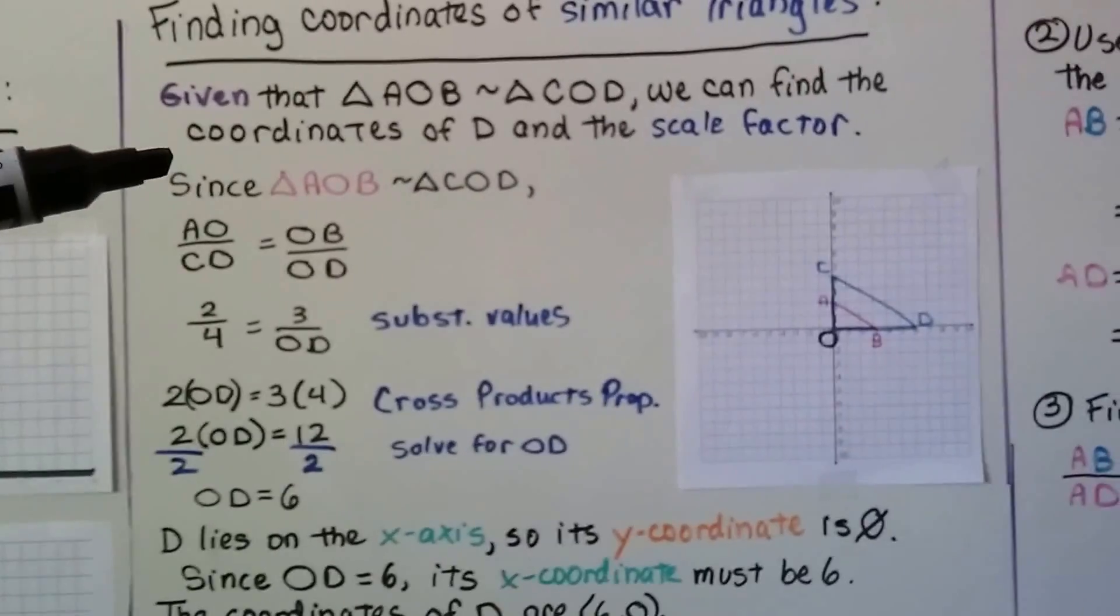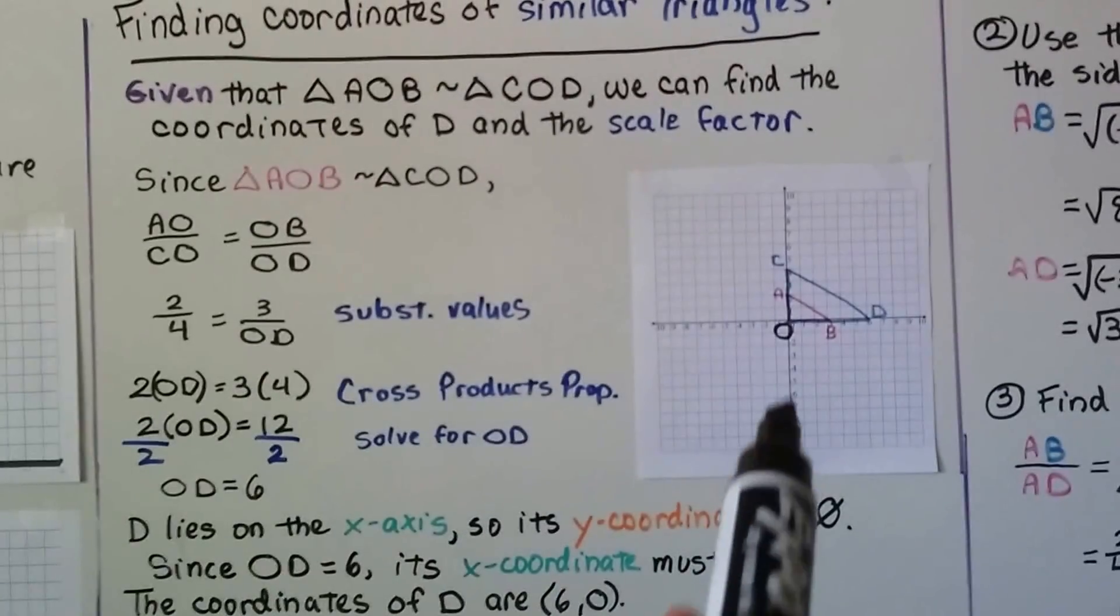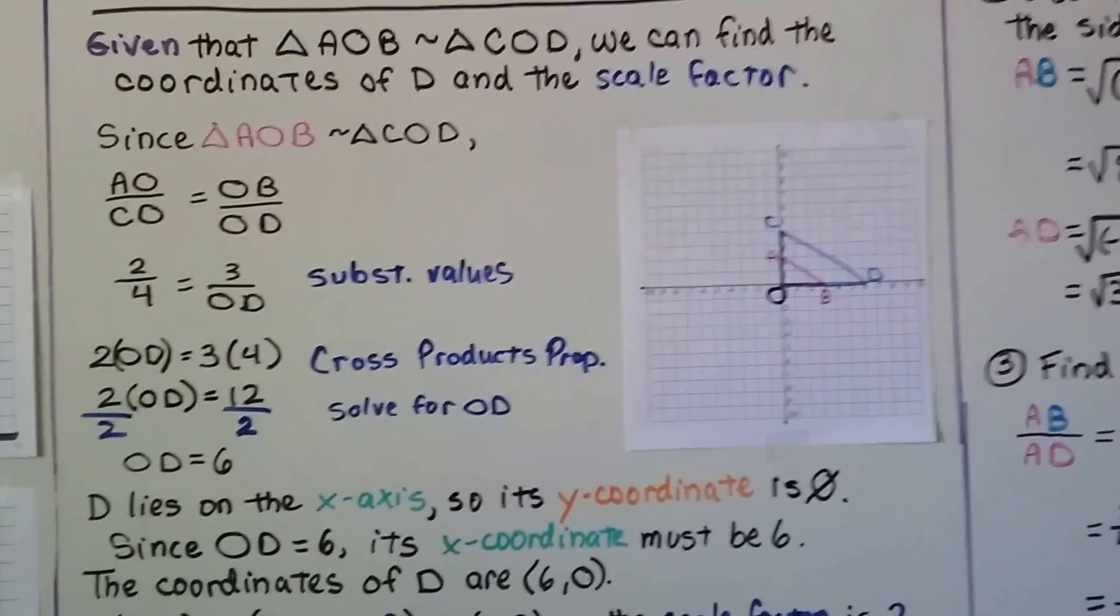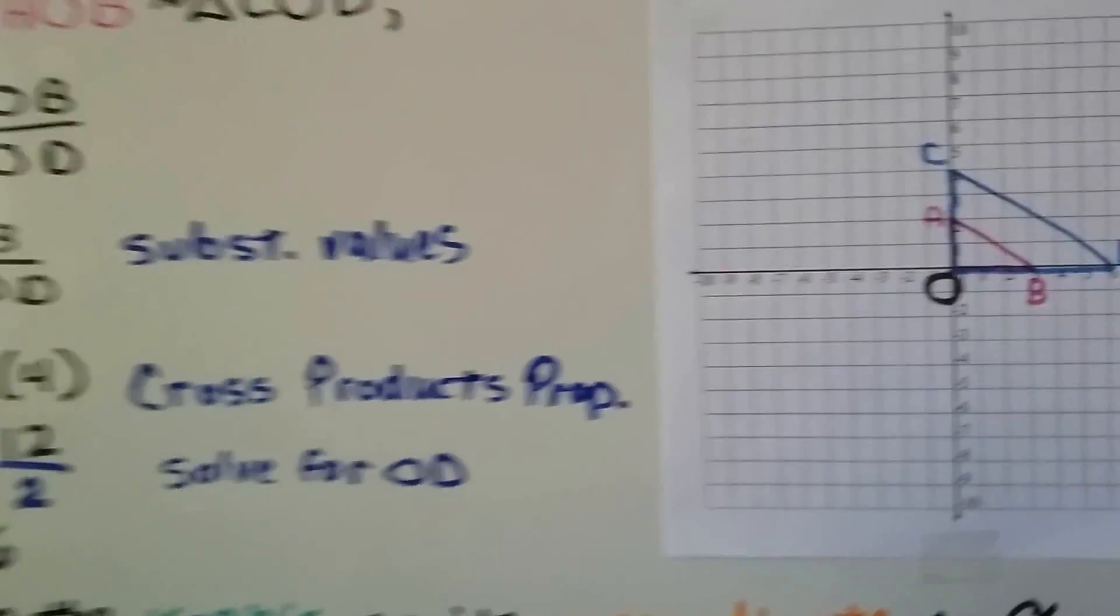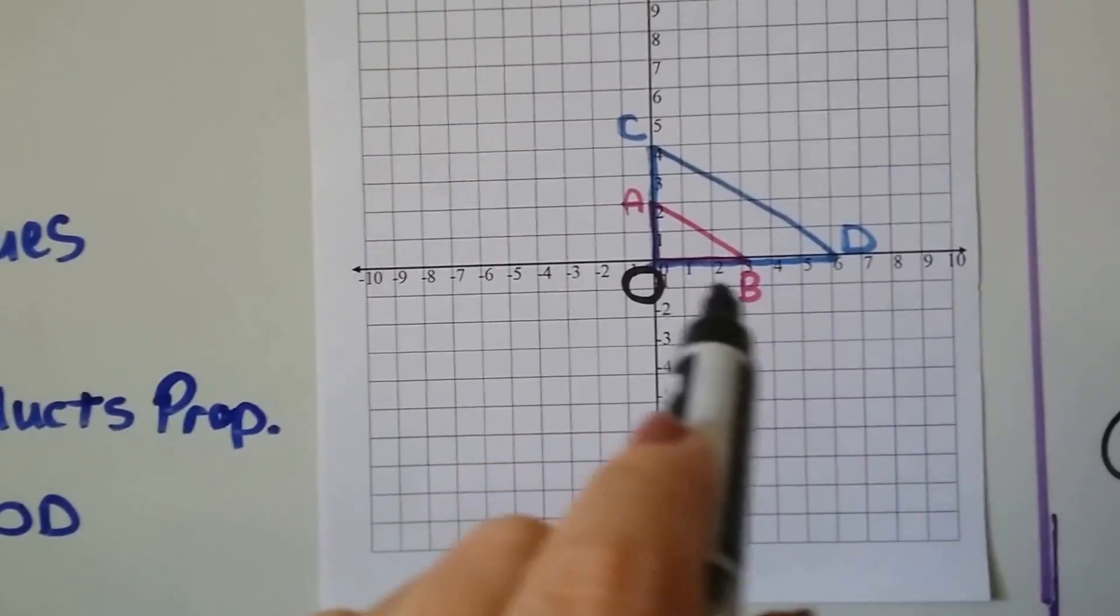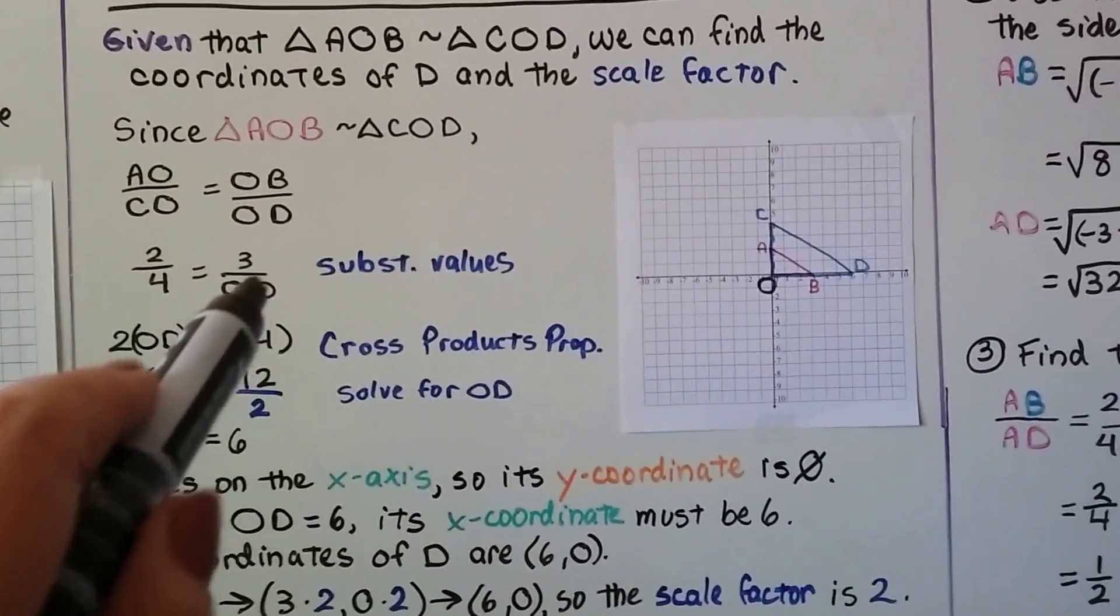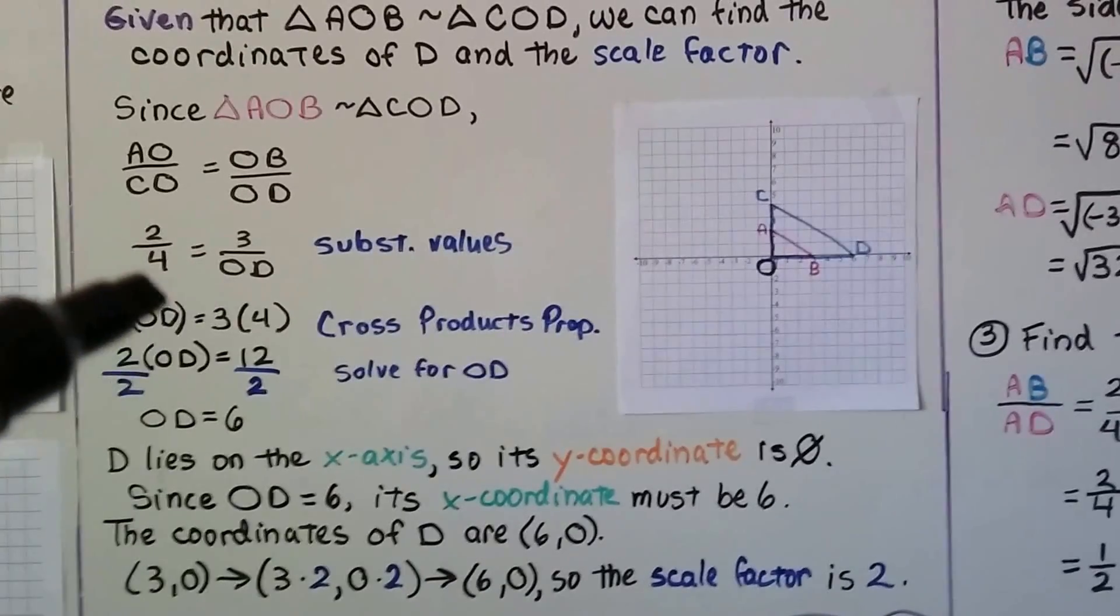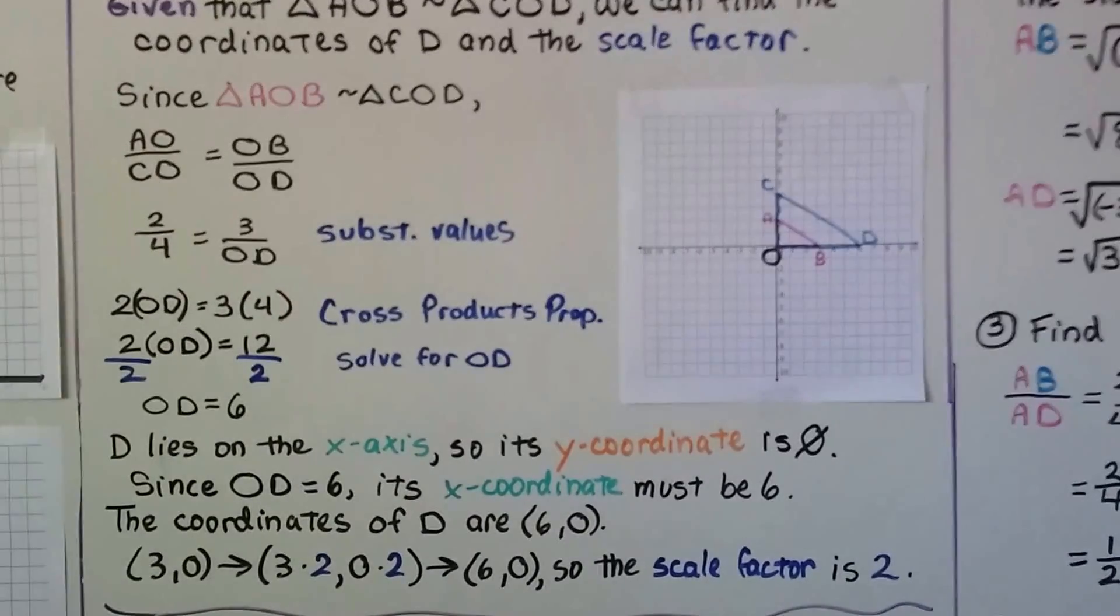Since they're similar to each other, we can write AO/CO = OB/OD. We substitute in the values: AO is two units, CO is four units, so we have 2/4, OB is three units. Now we can do cross products. We have 2·OD times 3 equals three times four, which is 2·OD = 12.